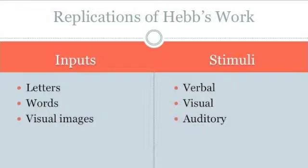Other researchers have since replicated Hebb's results using various inputs besides numbers, such as letters, words, and visual images. The methods of presentation have also varied: verbal, visual, and auditory. The key discovery is that regular repetition, as opposed to random repetition, during a serial recall task leads to improved memory performance — and this is the Hebb effect.